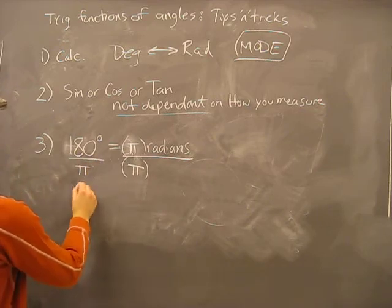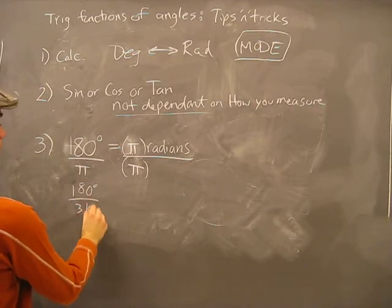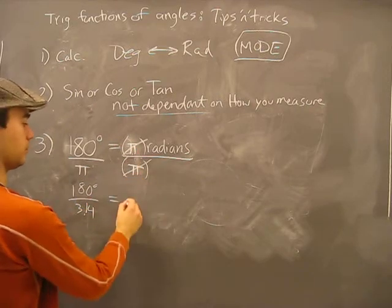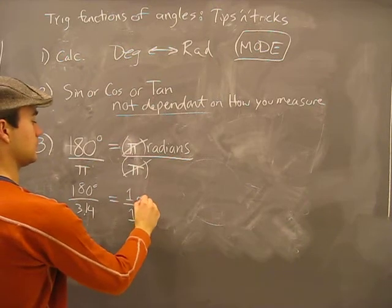So I will get 180 degrees divided by 3.14-ish, and that'll equal, those will cancel out, to 1 over 1 radians.